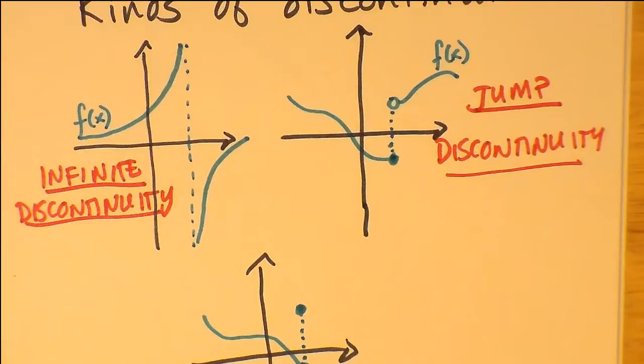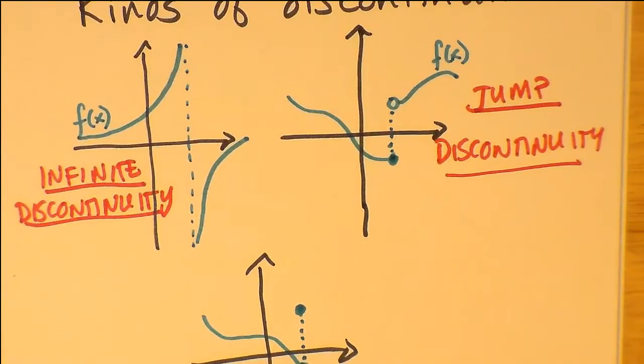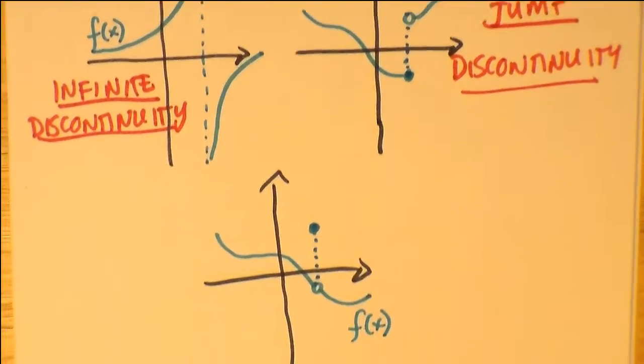where you can see that approaching a certain x value from the left may not equal that same f(x) approaching from the right.